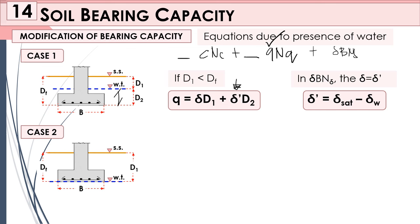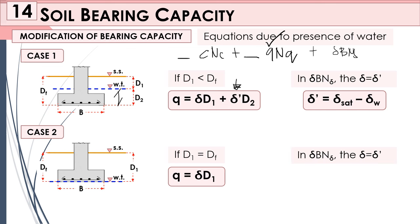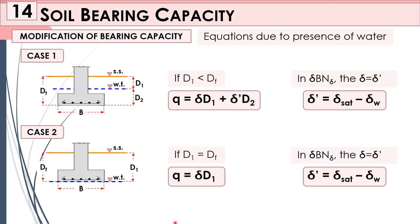Case 2 is when the water table is located exactly at the bottom of the footing, meaning d1 equals df. In this case, q = γd1 using the dry unit weight, and for the γBNγ term, γ is replaced by γ′ = γsat − γwater. The difference between Case 1 and Case 2 is only in the q value.